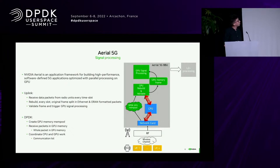So there is a first GPU processing stage that validates the inputs and data, rebuilds the frame, and then starts the processing. DPDK is very useful here in the first stage of processing on the network side of the problem.